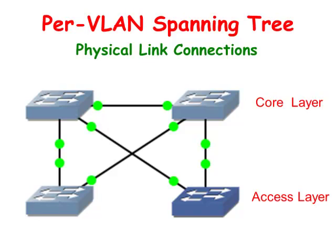This is used to load balance the network. This topology is also a redundant design, meaning that even if one of the links goes down, Spanning Tree can design a new topology to get the packets where they need to go.